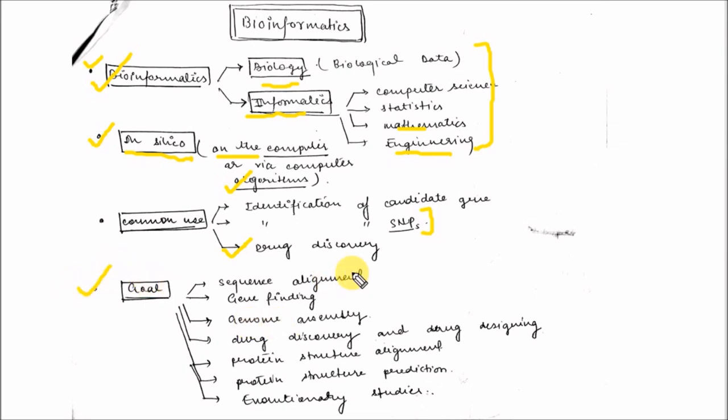These are the various goals of bioinformatics: sequence alignment, gene finding, ORF finding, gene assembly, drug discovery and drug designing, protein structure alignment, protein structure prediction, and various evolutionary studies.